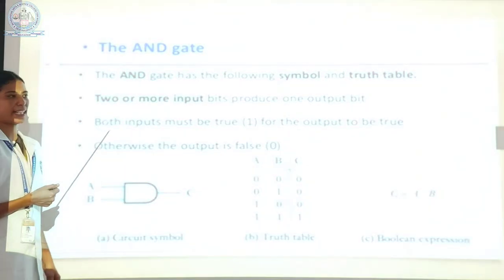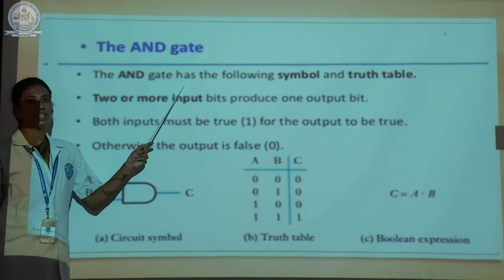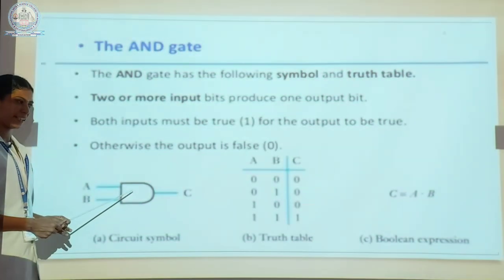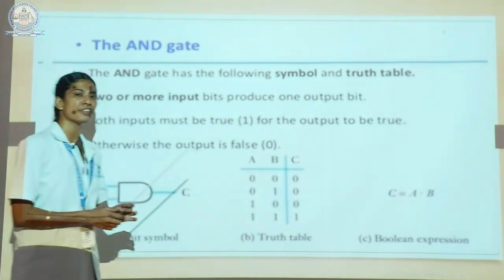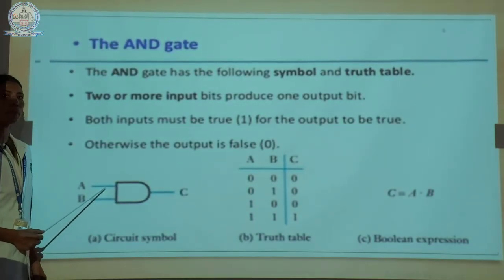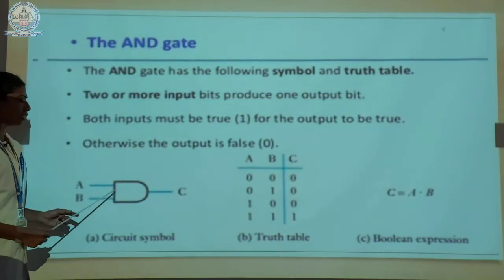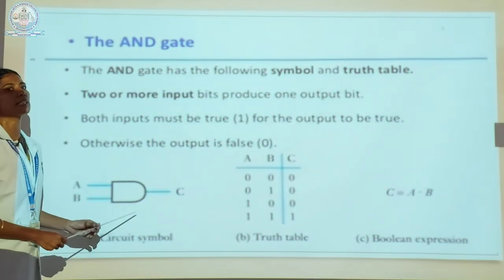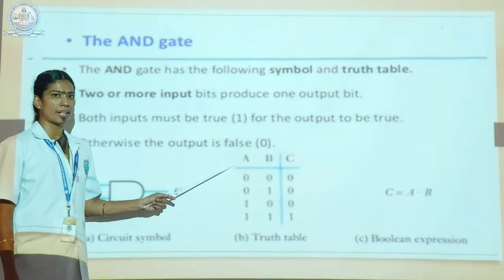Totally there are three basic gates. The first one is the AND gate. The AND gate has the following symbol and truth table. Here is the AND gate with its truth table and Boolean function. The AND gate has two or more inputs and produces only one output signal. The input signals are represented as A and B; the output is represented as C.